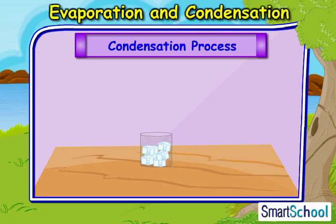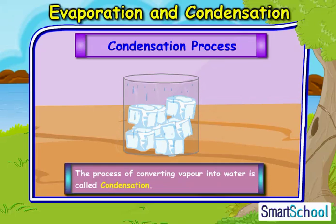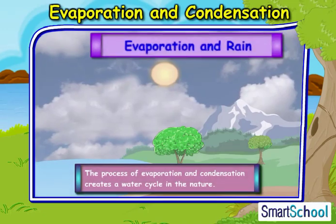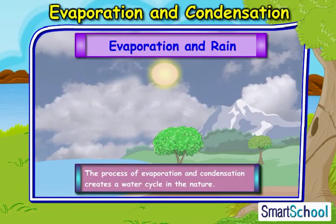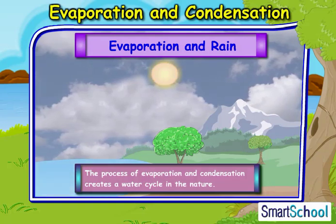When water vapor is converted into water, we call it the process of condensation. The process of conversion of water vapors into water is called condensation. Do you know the process of evaporation and condensation creates a water cycle in nature?